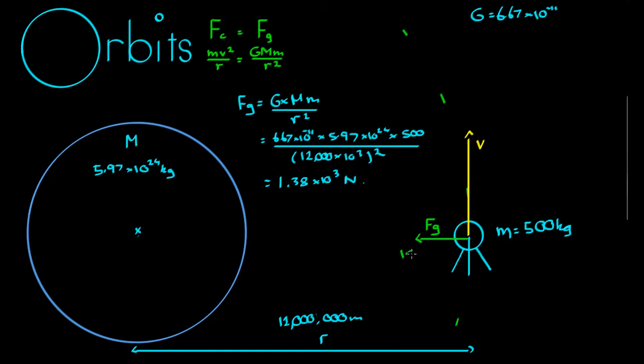So that is the gravity force here, Fg equals 1.38 times 10 to the 3. Now provided this satellite has no other force acting on it, this gravity force must also be the centripetal force, so we say 1.38 times 10 to the 3 must equal mv squared on r. Therefore, 1.38 times 10 to the 3 times r divided by m is equal to v squared.